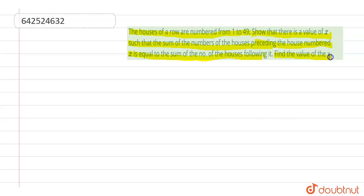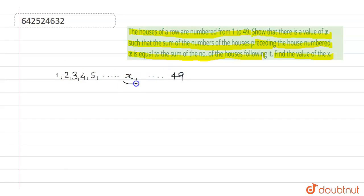We have the houses numbered 1, 2, 3, 4, 5 ... x ... up to 49. We have to find the value of x, and before x there will be x minus one, and after x there will be x plus one.